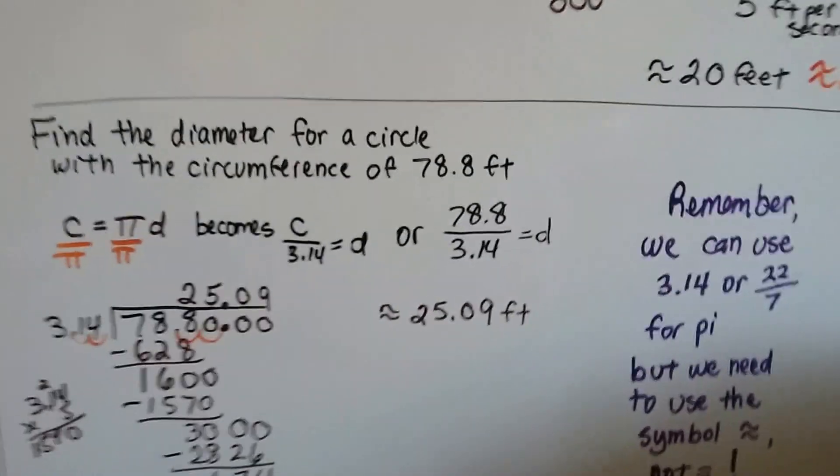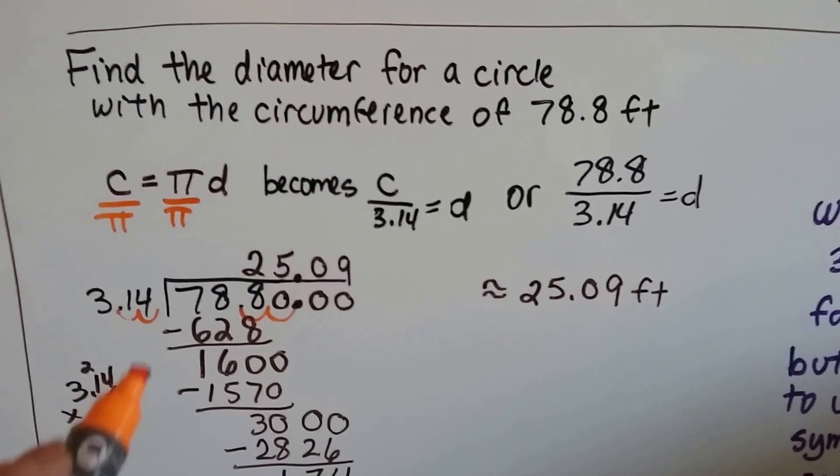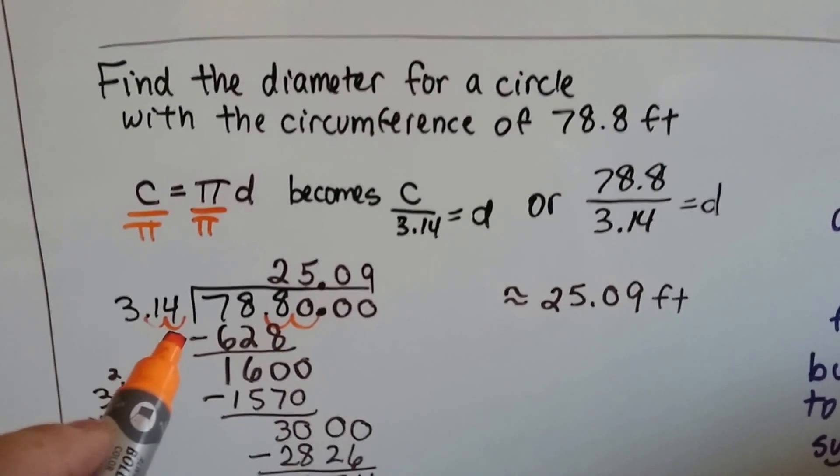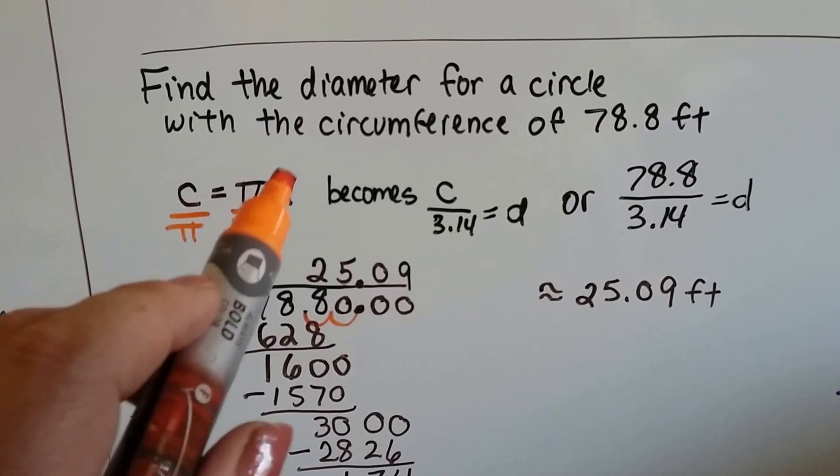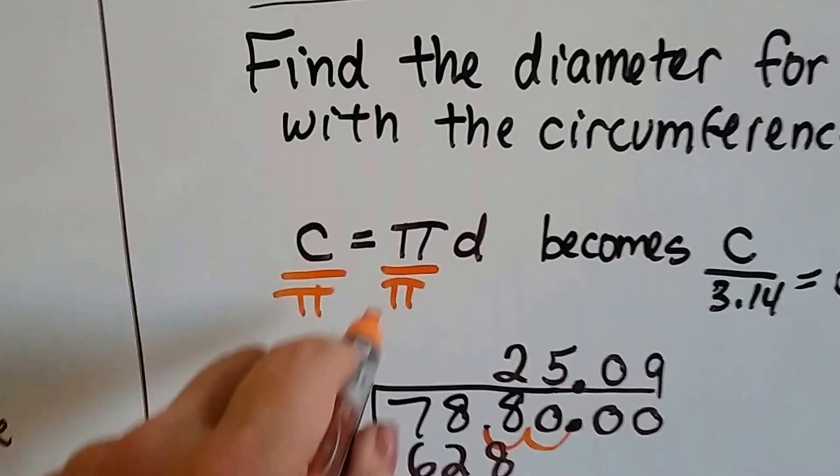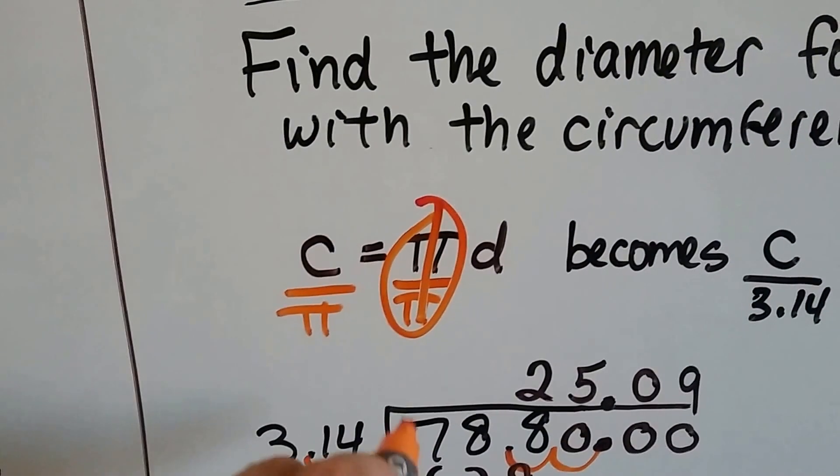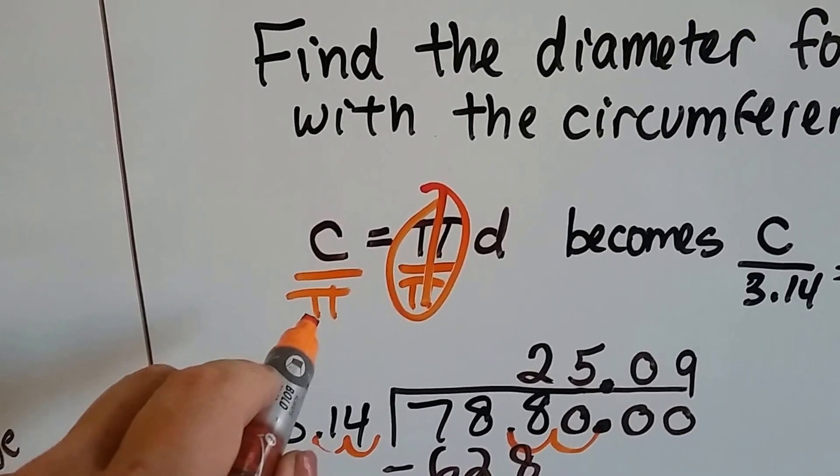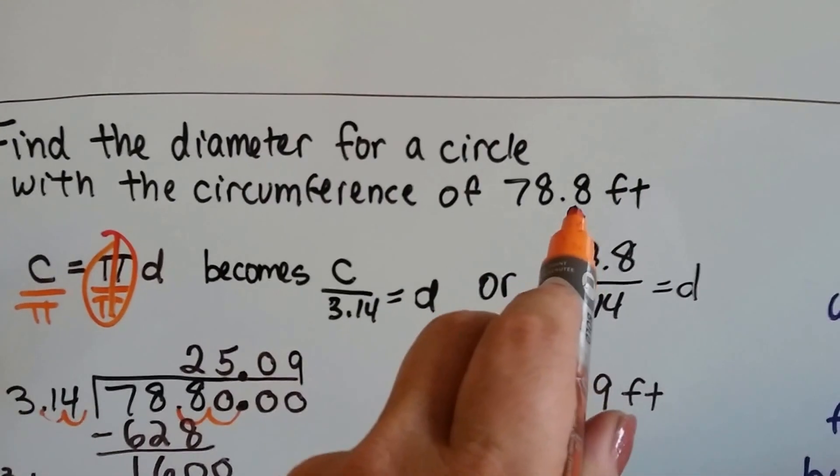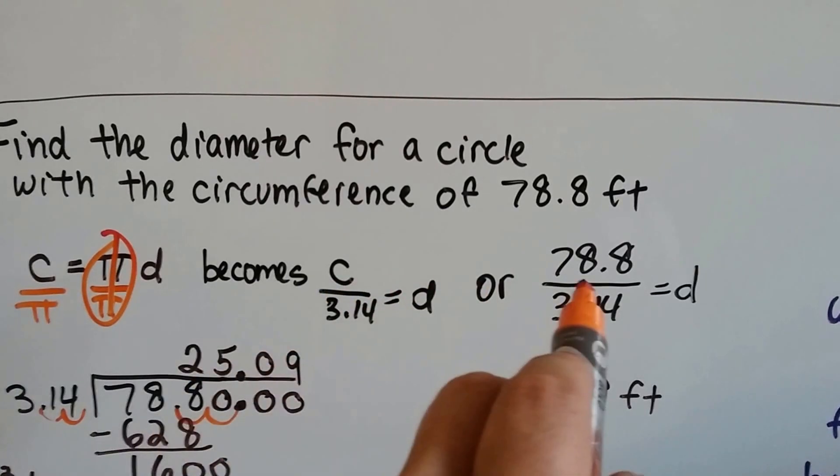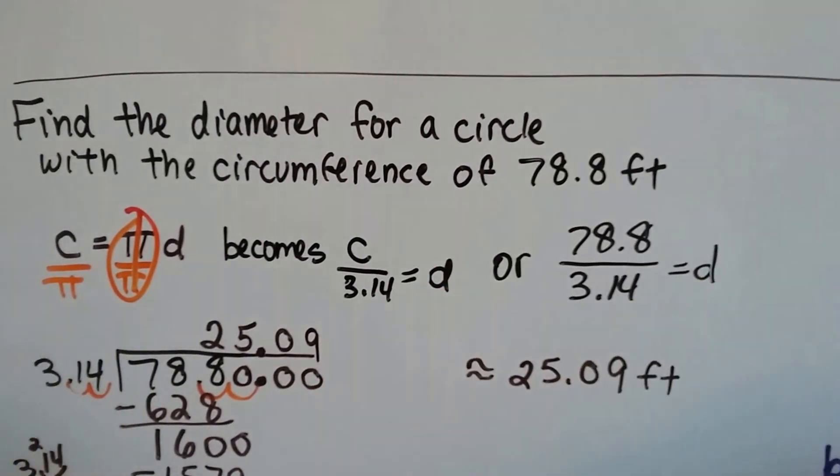Find the diameter of a circle with a circumference of 78.8 feet. So now we've got the diameter that we need to find. Our C equals pi D. We're going to divide both sides of the formula by pi to turn that into a 1. Pi over pi is 1. And then the circumference is going to be divided by the 3.14, the pi. So if the circumference is 78.8 feet, we're going to divide the 78.8 by the 3.14. And that will tell us the diameter.